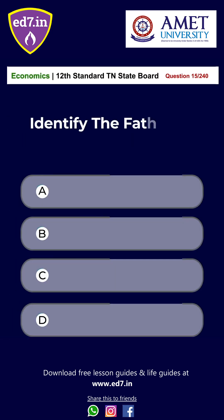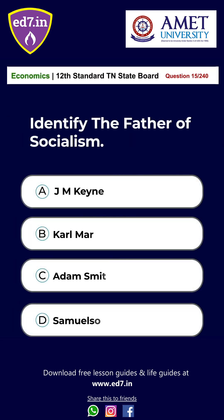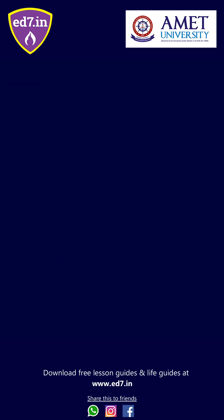Question 15. Identify the father of socialism: A. J.M. Cain, B. Karl Marx, C. Adam Smith, D. Samuelson. The answer is Option B: Karl Marx.